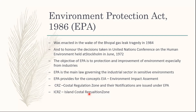In order to prevent future incidents, the EPA was made. This was also to honor decisions taken at a biodiversity convention in 1972. The objective of EPA is simple: to protect and improve the environment, especially from industries. EPA is the main law governing the industrial sector in sensitive environments. EPA introduces many concepts like Environmental Impact Assessment (EIA), coastal regulation zones, and island coastal regulations. The act itself is a small act, but it confers a lot of powers on the central government to provide rules and regulations for governing industries and other activities. We will be covering only coastal regulation zones and EIA in this webinar.